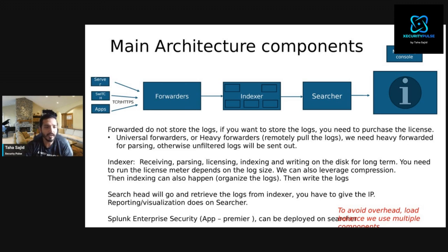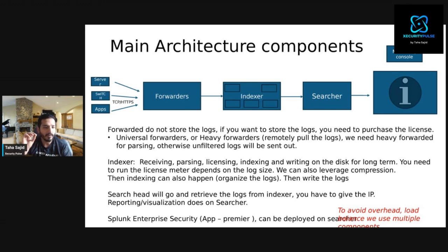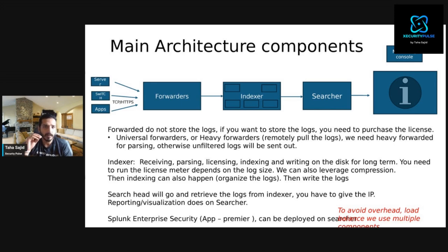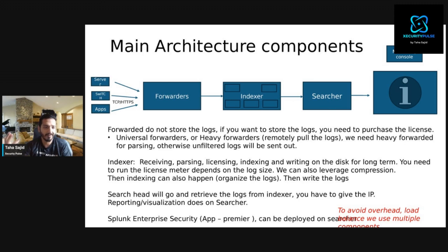Forwarders can be of two types: the universal forwarder and the heavy forwarder. Remember, forwarders do not store logs — for storing you need another component like an indexer or a log storage platform. Universal forwarders are installed on the endpoints, while heavy forwarders are configured to pull logs from the universal forwarders. The reason for having both is that with a heavy forwarder, logs can be parsed before sending; otherwise unfiltered logs go directly to the indexer.